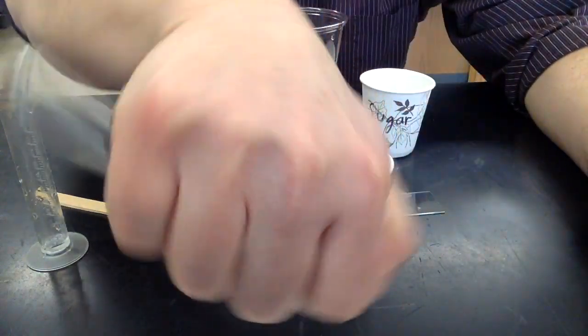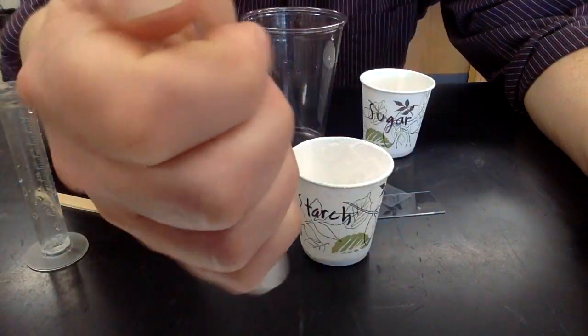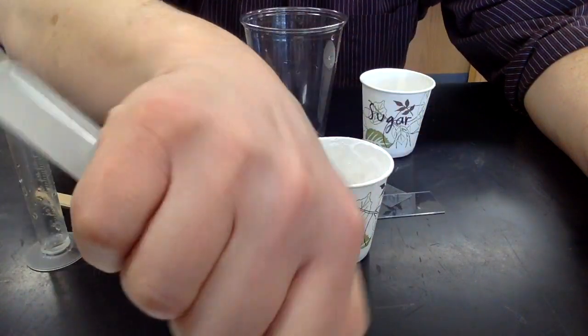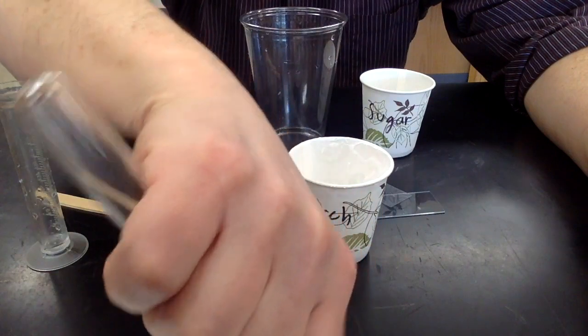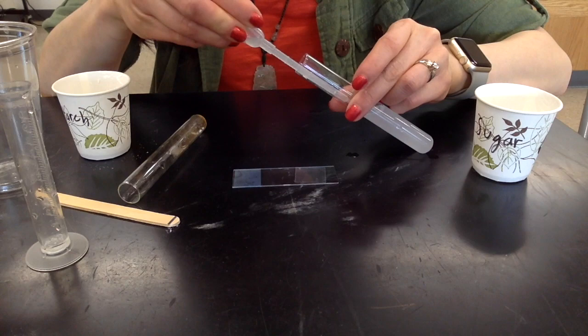Do the solubility test by shaking it back and forth to see how it reacts. Do this with the starch and make some observations. Then you will repeat this process with the sugar.